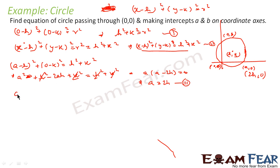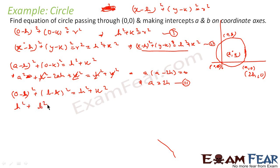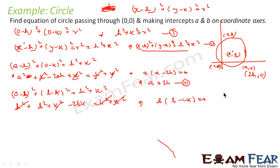Now substituting (0, b) into the equation gives (0 - h)² + (b - k)² = h² + k². Expanding: h² + b² - 2bk + k² = h² + k². The h² and k² terms cancel, giving b(b - 2k) = 0. Since b ≠ 0, we get b = 2k, therefore k = b/2.